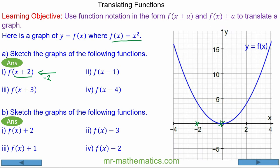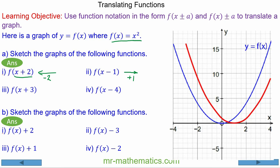For question 2, it's going to be a horizontal translation in the positive direction of plus 1 unit, so the turning point is now at positive 1.